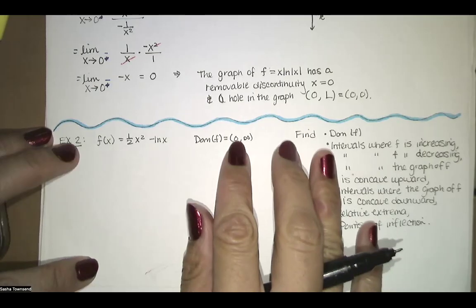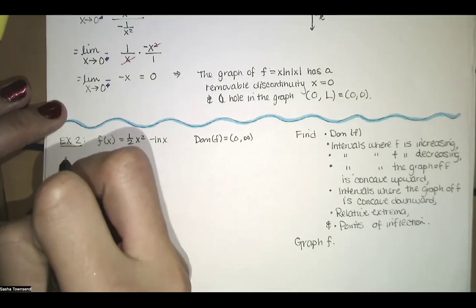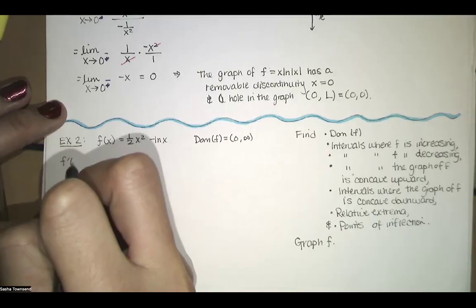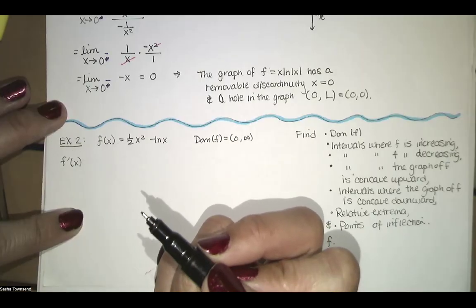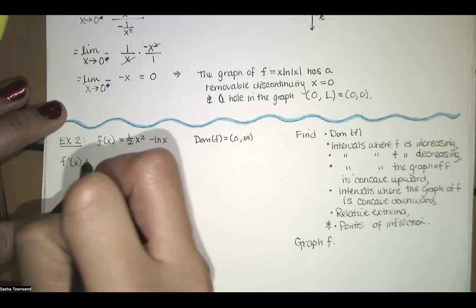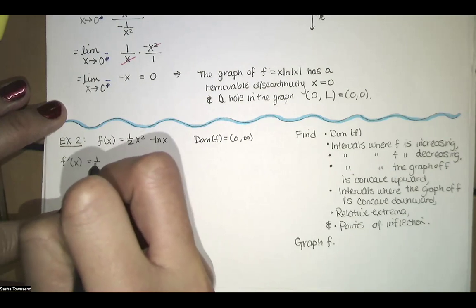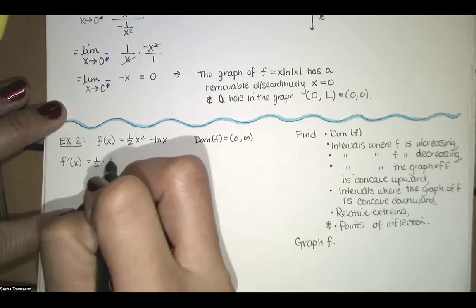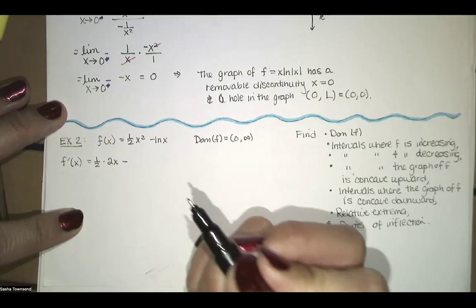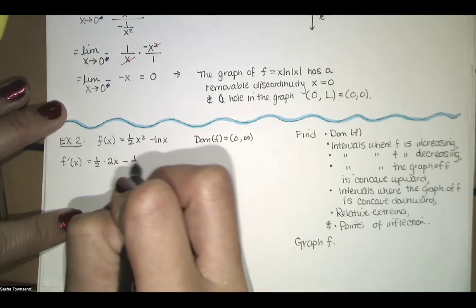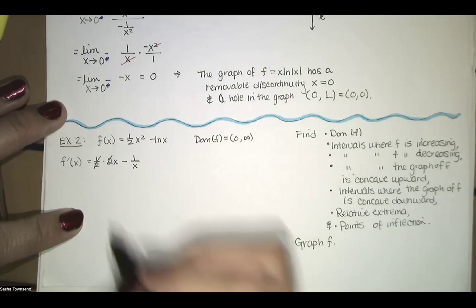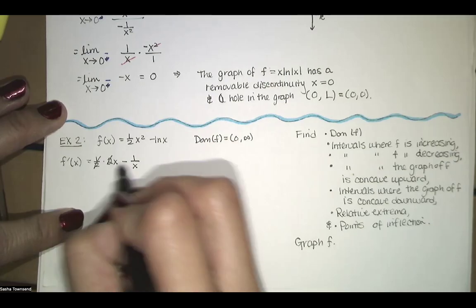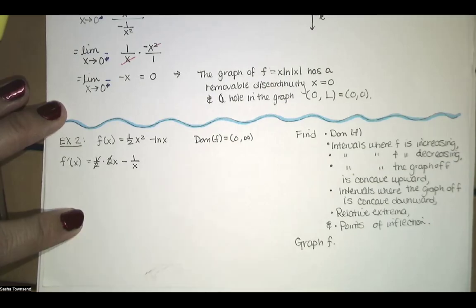Now we know our domain. To infer where the function is increasing or decreasing, we compute the first derivative. We get one half times the derivative of x squared, which is 2x, minus the derivative of natural log of x, which is 1 over x. The 2 and the one half reduce, so we get x minus 1 over x.